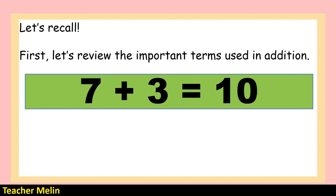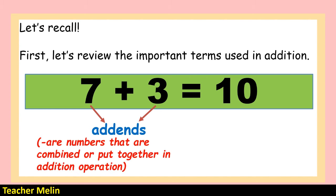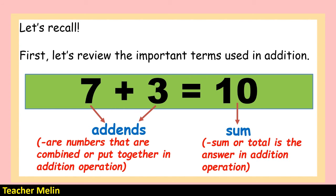Look at the number sentence: 7 plus 3 equals 10. 7 and 3 are what we call addends. Addends are numbers that are combined or put together in an addition operation. Number 10, on the other hand, is what we call the sum. The sum or total is the answer in an addition operation.